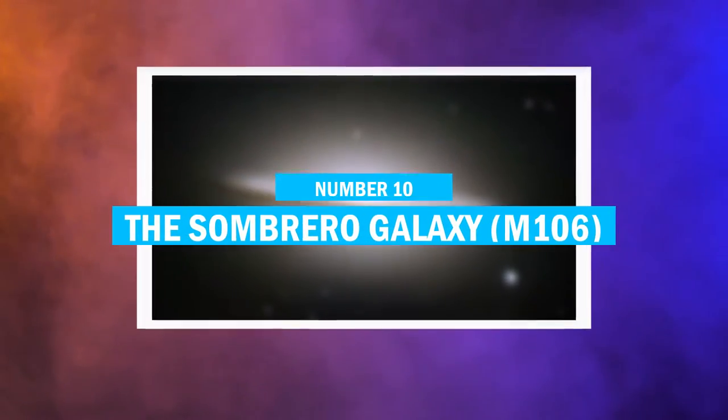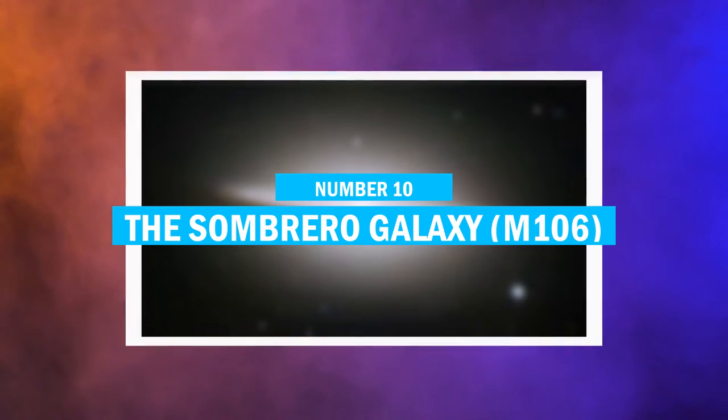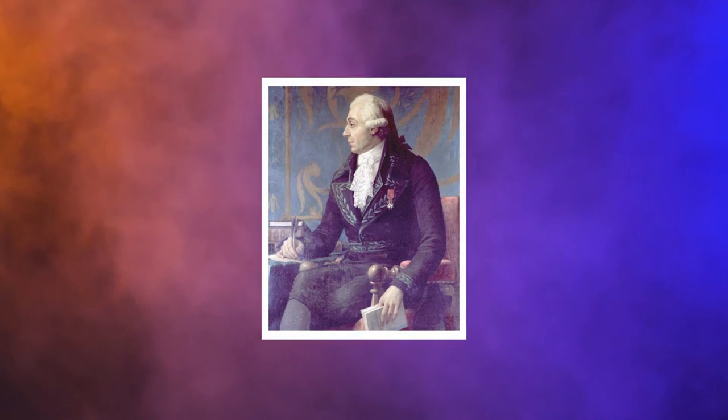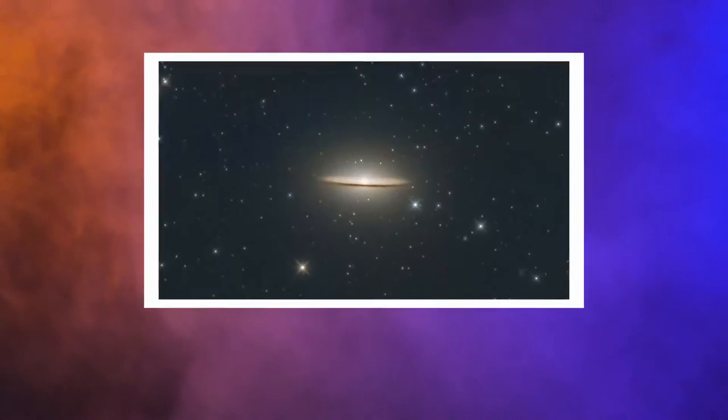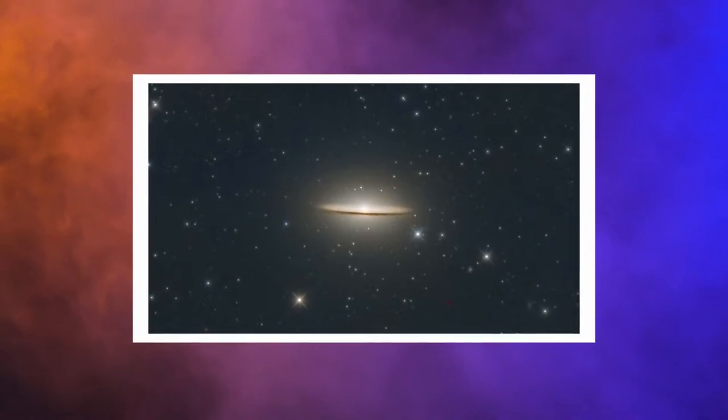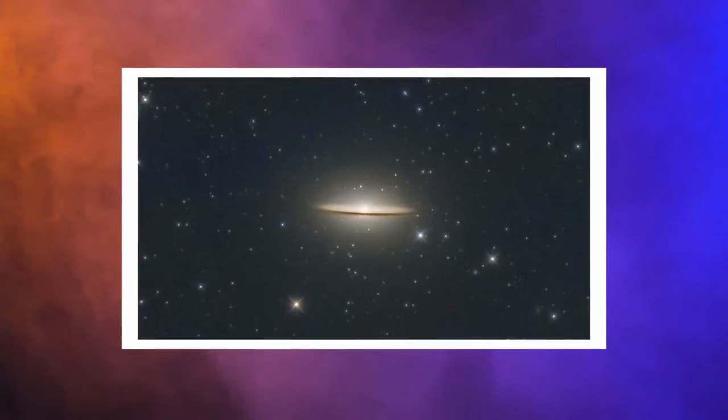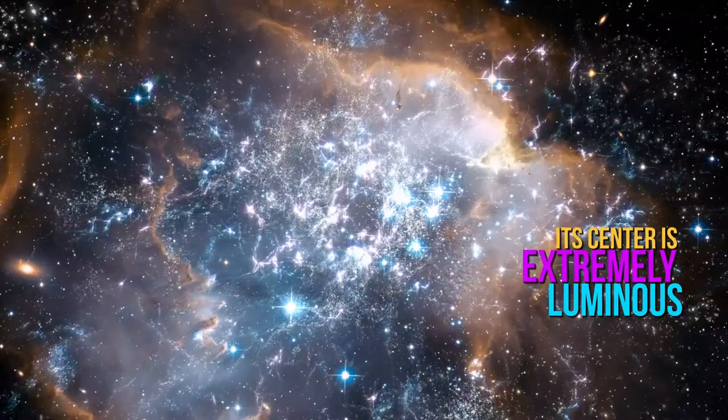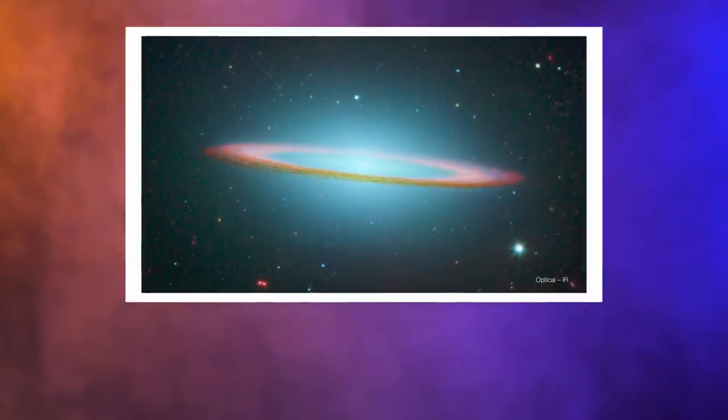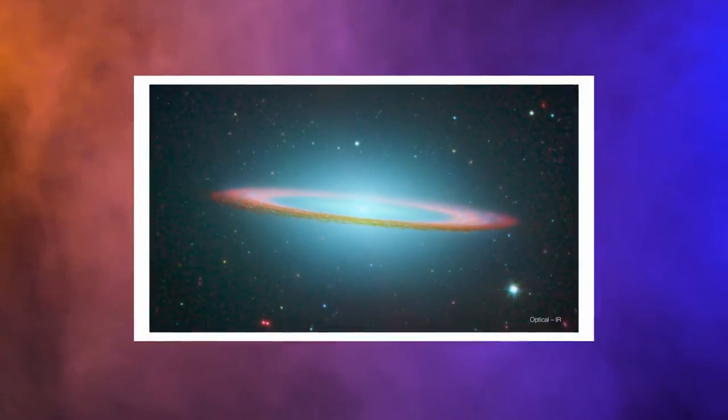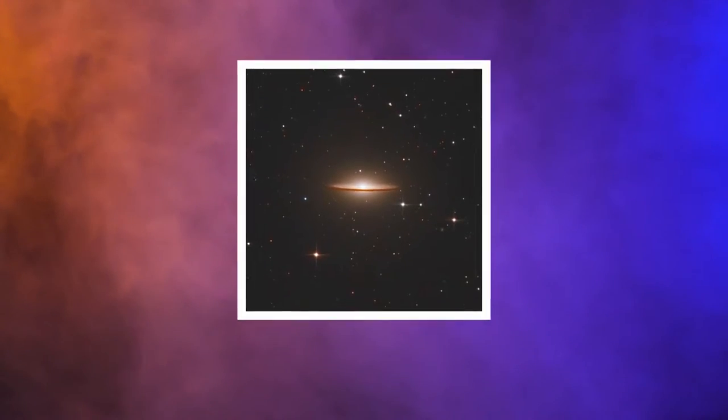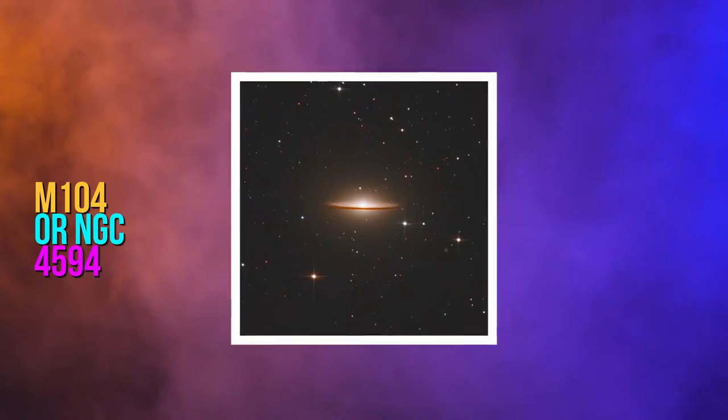Number 10. The Sombrero Galaxy, M106. Pierre Machin found the Sombrero Galaxy in 1781, although it was not officially listed in the Messier catalog until 1921. The galaxy is about 30% the size of the Milky Way, and its center is extremely luminous. The Sombrero Galaxy is one of the barred spiral galaxies that is both uncommon and beautiful. Its official name is M104 or NGC 4594.